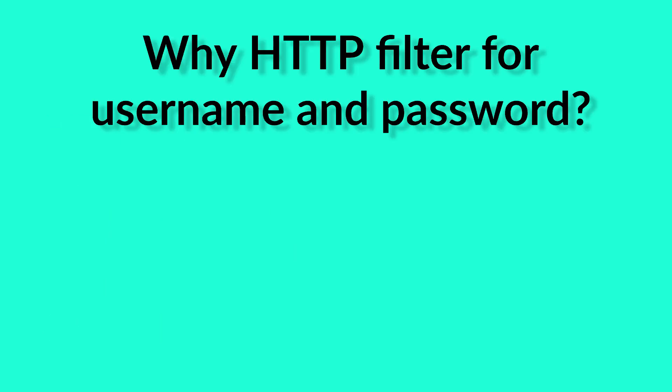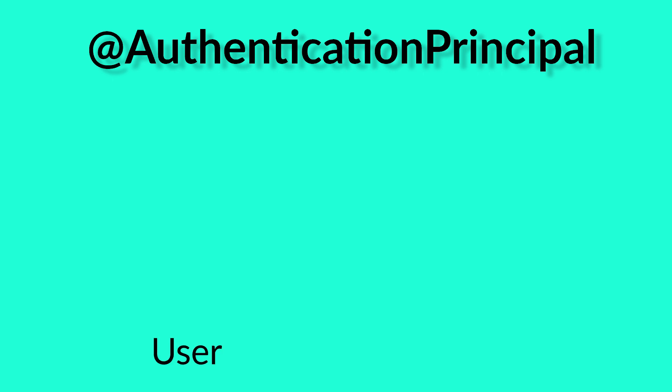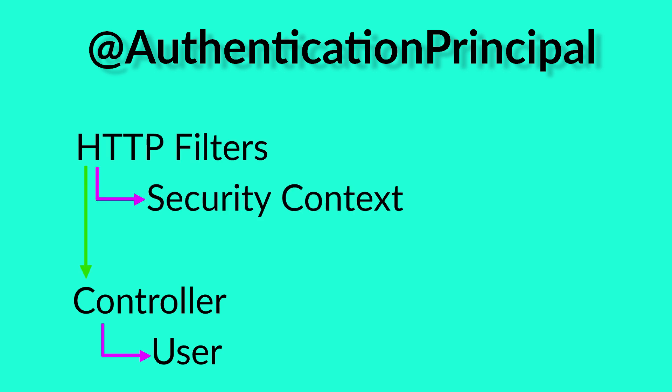Why use an HTTP filter for the username-password authentication? This way, I have a single way to authenticate a user via the HTTP filters — I don't have the logic split in several services. But the best advantage is the following: this @AuthenticationPrincipal annotation will inject the object of the authenticated user in my controller. Using the HTTP filters, I set into the security context the user information — the user object. And Spring, with this annotation, will look for the user object in the security context. This way, having the user authenticated with any system type — JWT or password — I will always have the user object injected in my controllers.